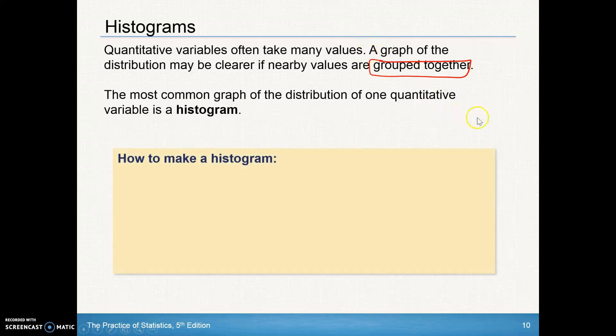So how do we make a histogram? Well, here's some general guidelines. What we're going to do is take the range of the data, so go from the minimum to the maximum. Take a look at that data and divide into classes of equal width.